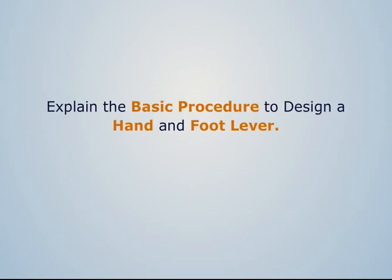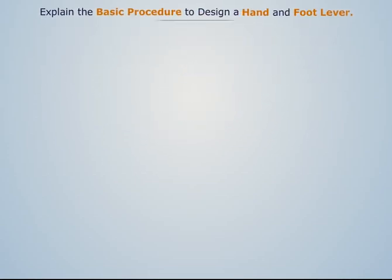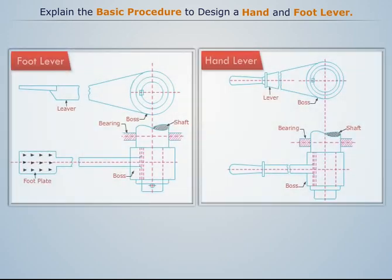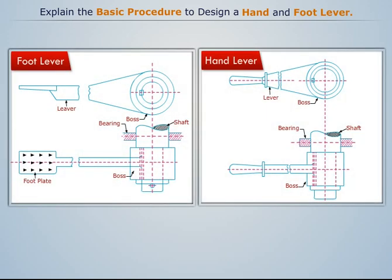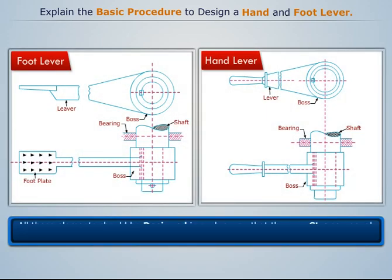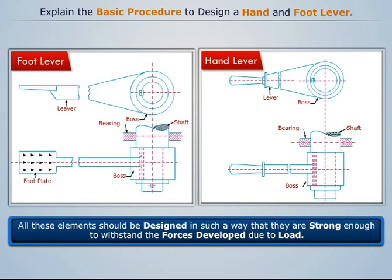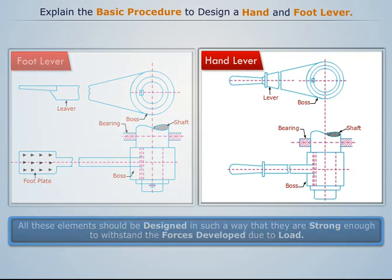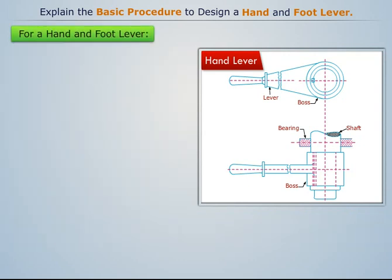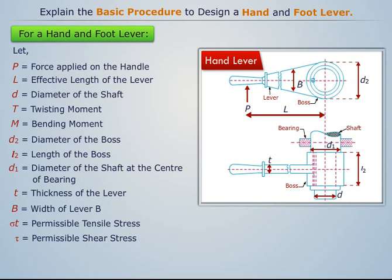Explain the basic procedure to design a hand and foot lever. A hand and foot lever consists of the elements as shown. All these elements should be designed in such a way that they are strong enough to withstand the forces developed due to load. The preferred nomenclature for a hand and foot lever is as shown. Now let's understand the basic procedure to design a hand and foot lever.